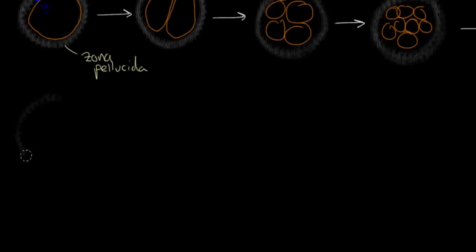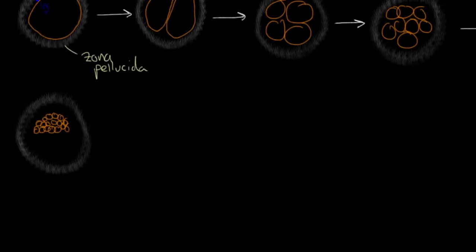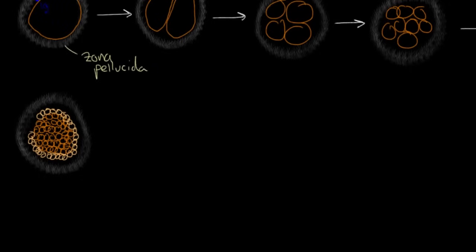You're still stuck within that zona pellucida. The cells are drawn quite compacted, all right in the middle of the structure, and they do look like they're a little bit tighter together. This is a process called compaction — the different cells within the morula start to get closer and closer together. In fact, the cells start to get a little bit different from each other. The cells on the outside are a little bit different, and this process of being able to tell cells apart as they become different things is called differentiation.